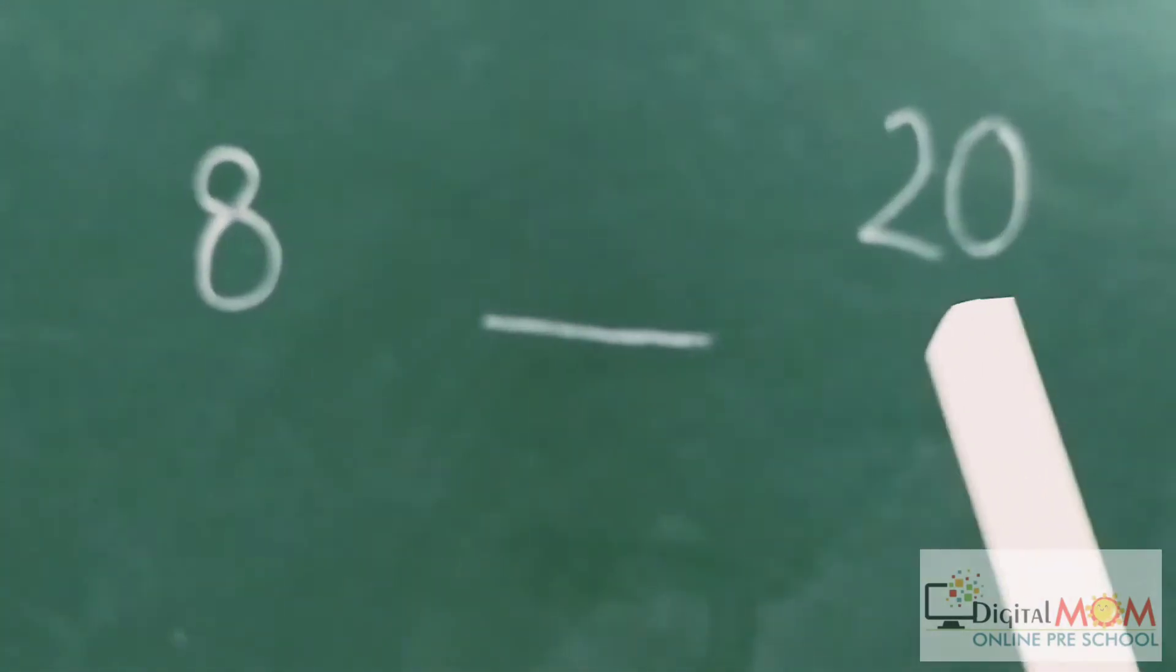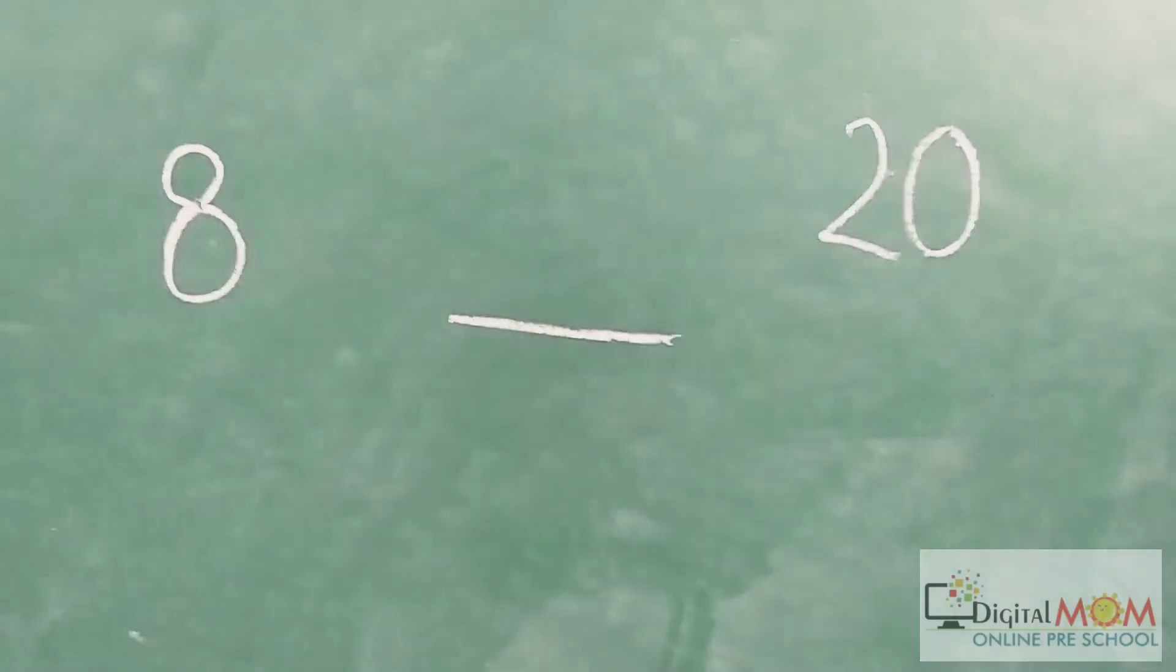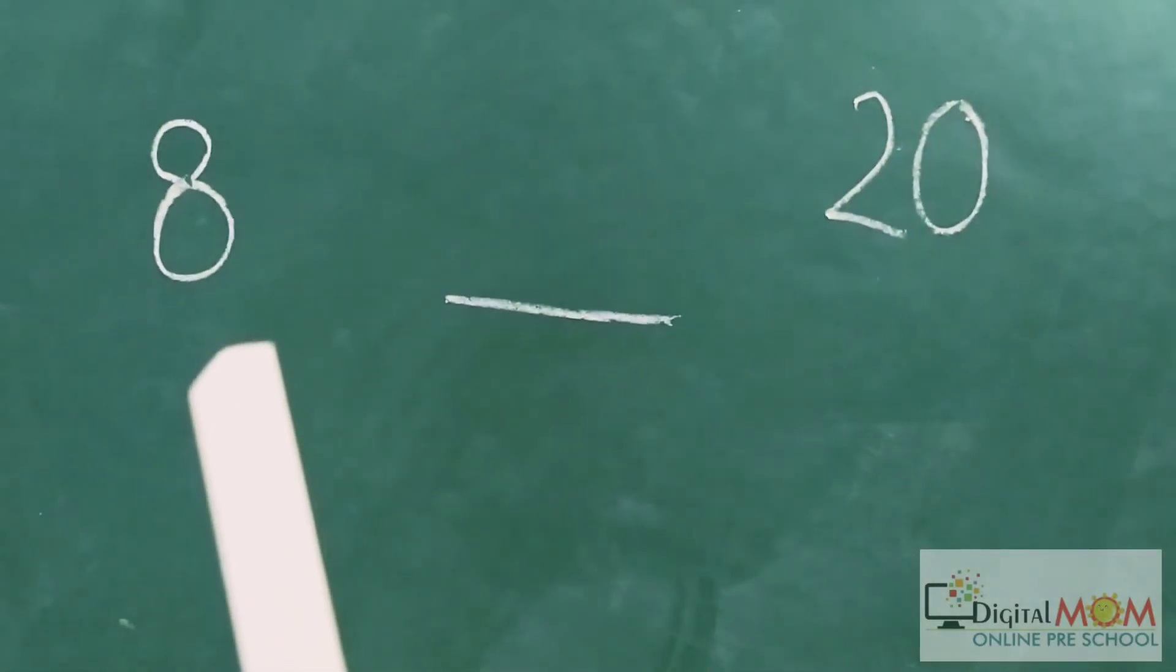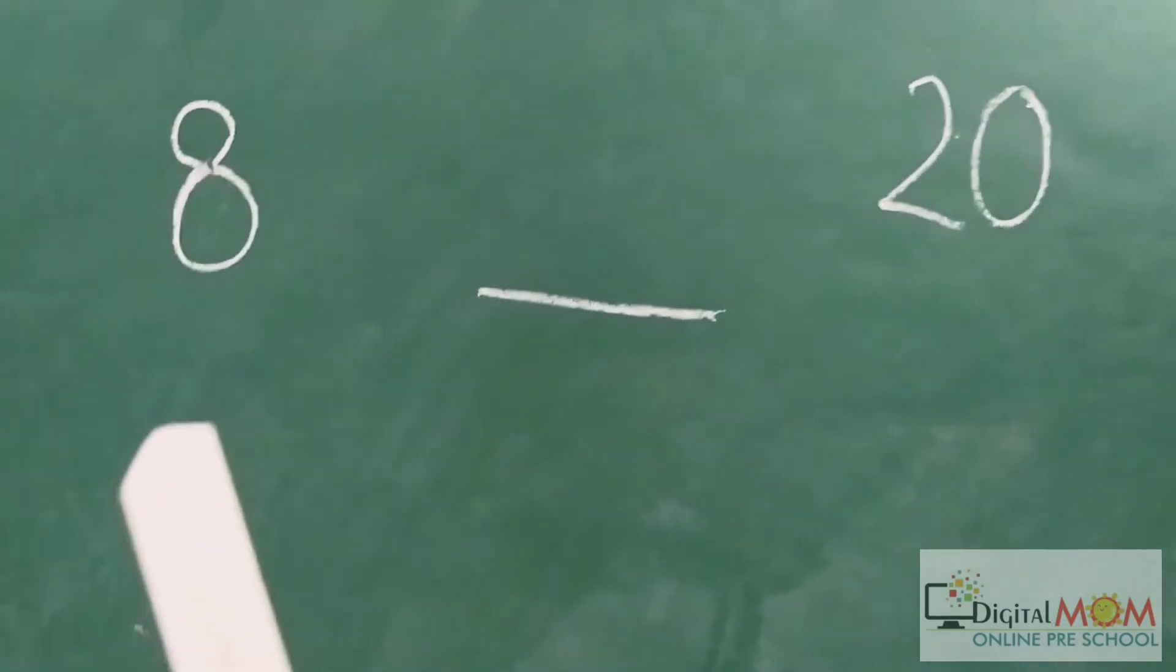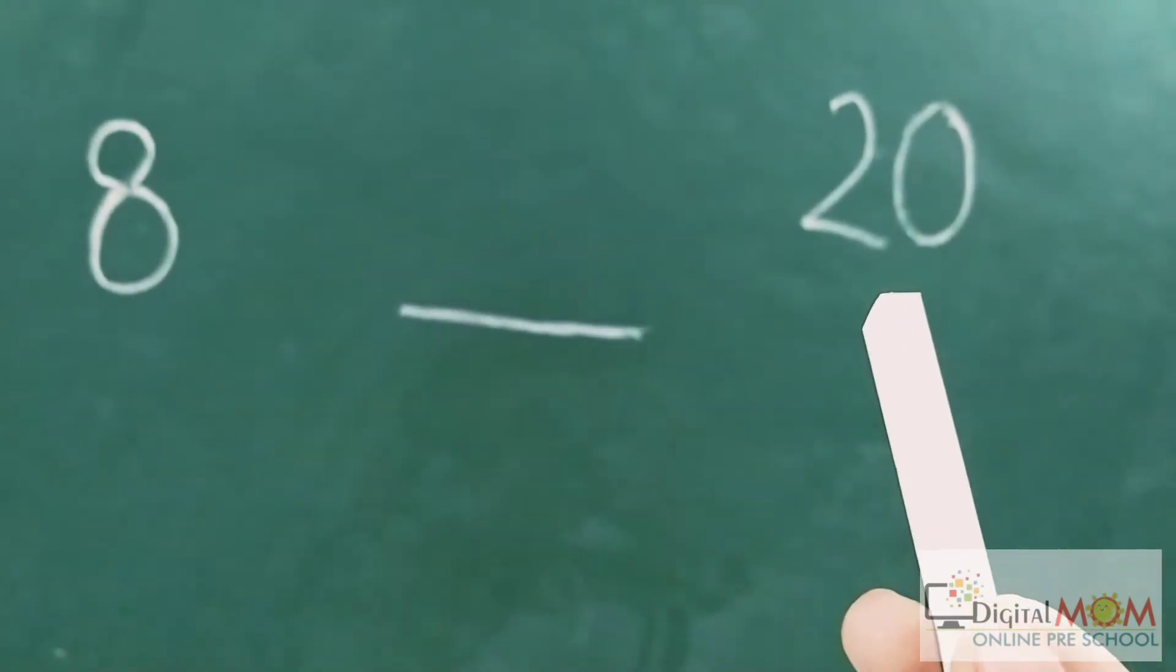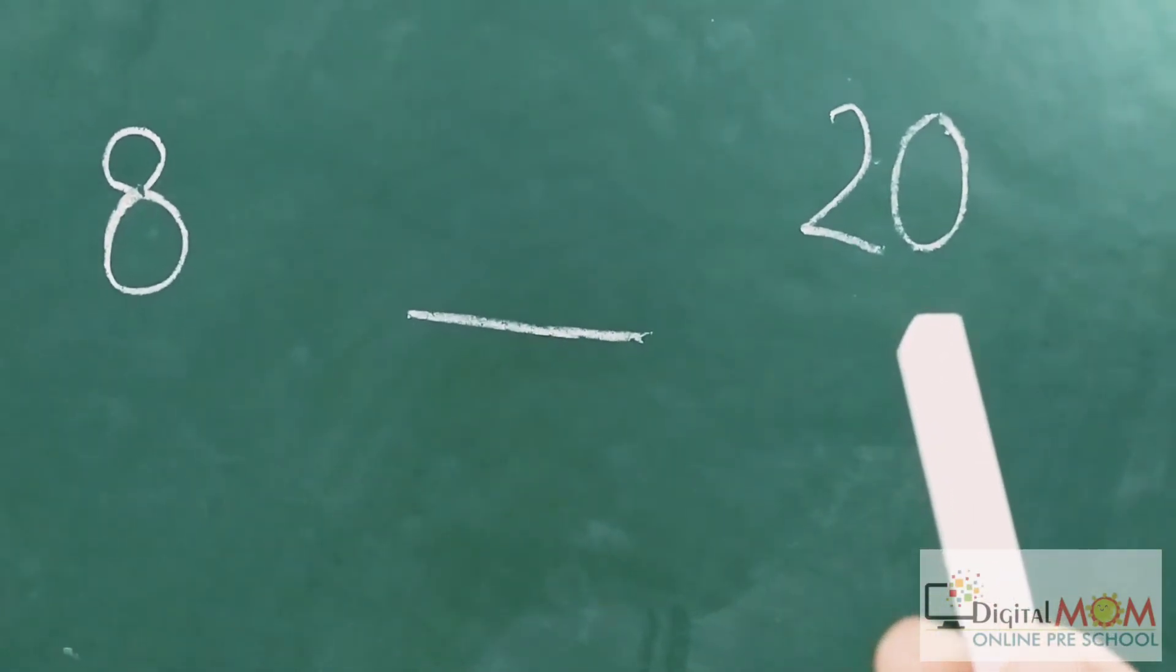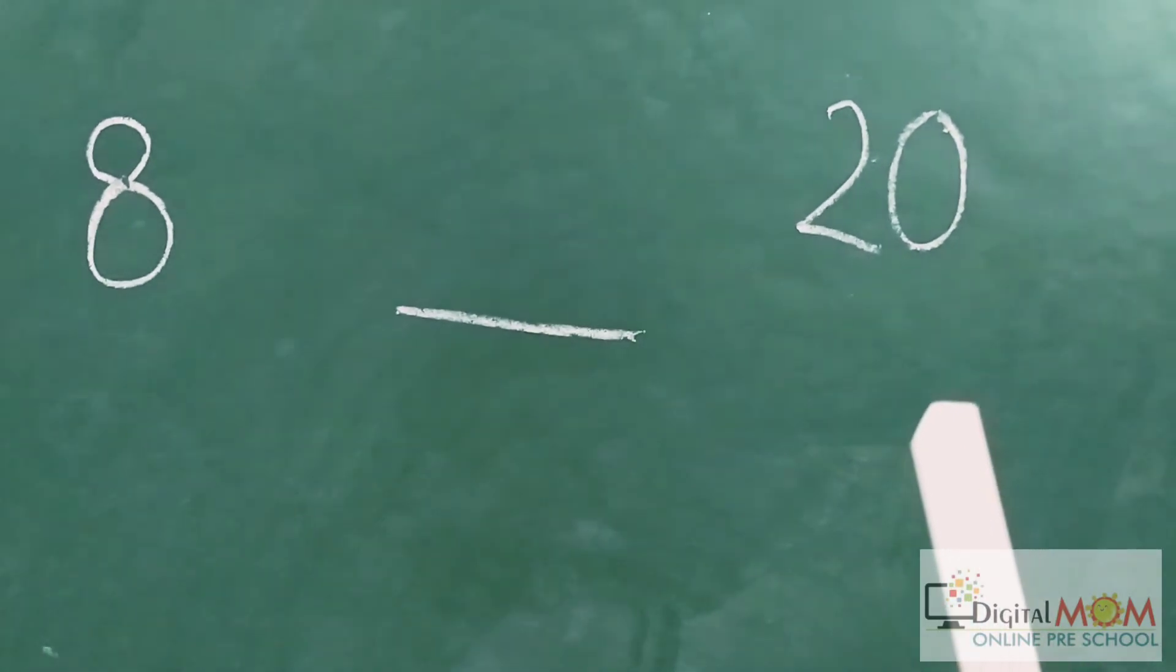Eight and two zero, twenty. Now again think, if number eight is here, how many toffees do we get? Only eight. And if number twenty is here, how many toffees do we get? We will get twenty toffees.